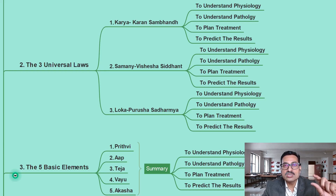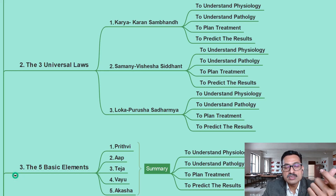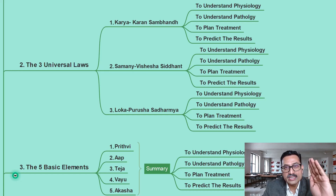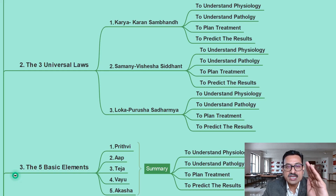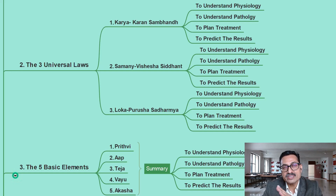Karyakarana Sambandha is the cause and effect relationship — a very common law: every action has a reaction, every effect has a cause, and for every cause there will be an effect.